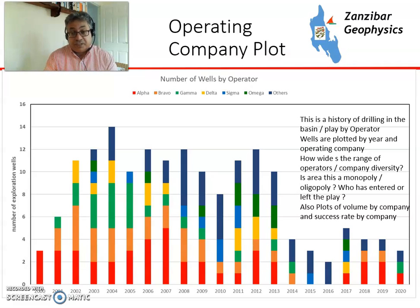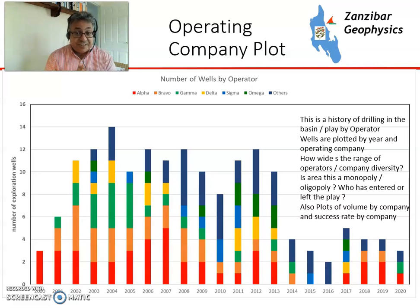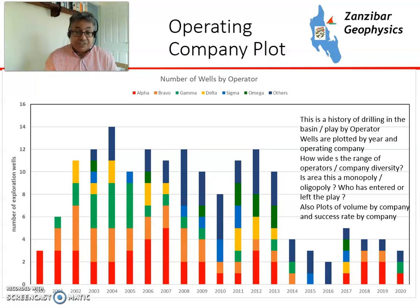Then you have a plot by operating company. Different operators have different ideas. If you have a basin with a lot of different operators — say 10 or 12 active operators — you will have 10 or 12 different teams of geologists who will come up with 10 or 12 different ideas, and new things will come through. If you have a monopoly, then you have one team of geologists with one set of ideas, and new plays may be a little bit harder to push through. If you've got many organizations, however open or closed they are, new things will come through.